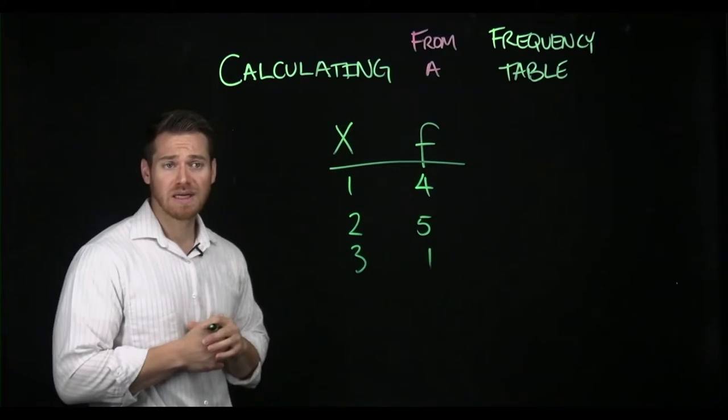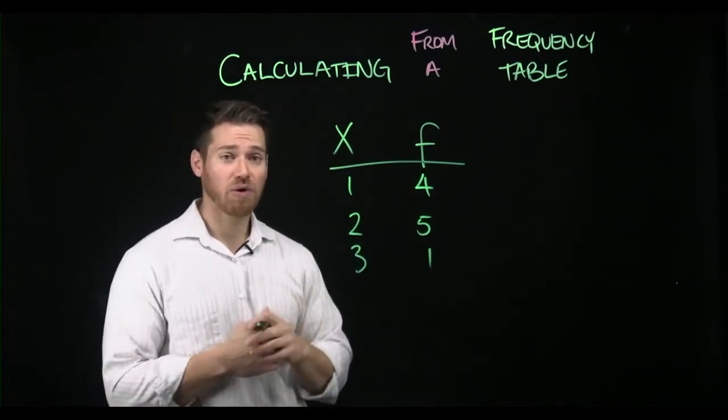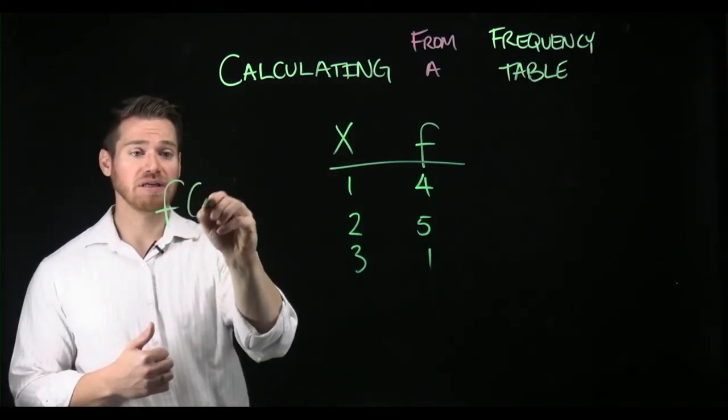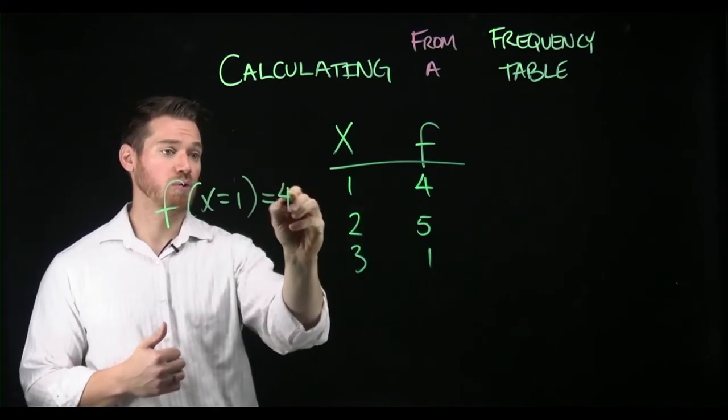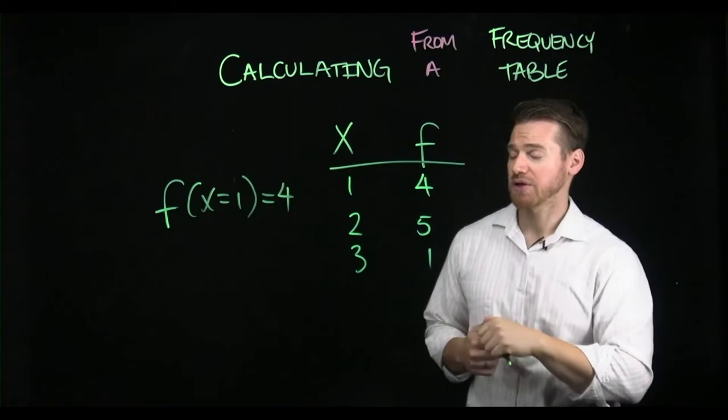So if I look at this data, I can quickly identify a few things. How often does the score X equals one occur? Well, the frequency of X equals one, I can see in this table, is four. If I talk about the raw frequency, how many times that value occurs.